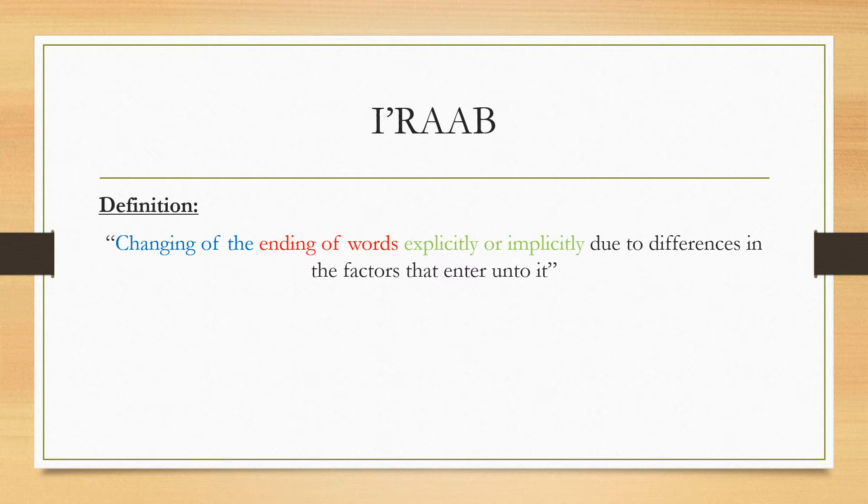جاء زيدٌ، مررت بزيدٍ، رأيت زيدًا — it's explicit. In each scenario I put it under the influence of another external factor, and in each case the ending of the word changed. Another example where the changing occurs but is implicit: جاء الفتاة, رأيت الفتاة, مررت بالفتاة. The word فتاة changes, but it's implicit — تقديري, not لفظي.